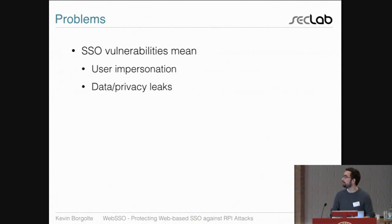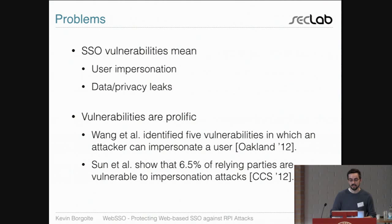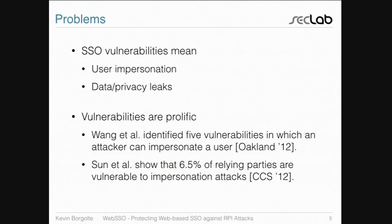Are current SSO protocols actually vulnerable? There have been two studies — one at Oakland '12 and one at CCS '12 — and they found a bunch of vulnerabilities. One study identified five vulnerabilities allowing impersonation of the identity provider (on Farmville via Facebook), impersonation of the relying party (e.g., the New York Times), and user impersonation to get data from the IDP. A second study by Sun et al. evaluated websites using single sign-on and found 6.5% are vulnerable to impersonation attacks.